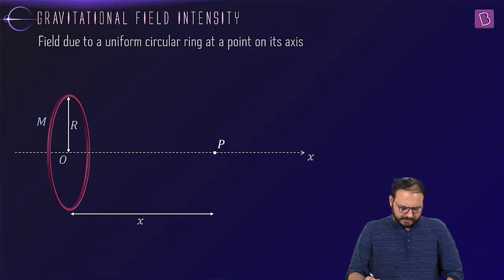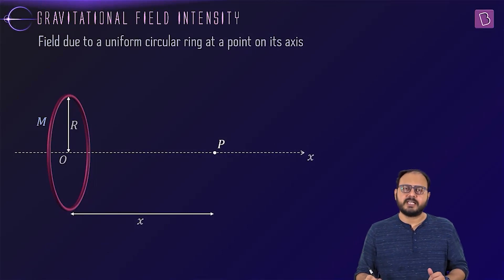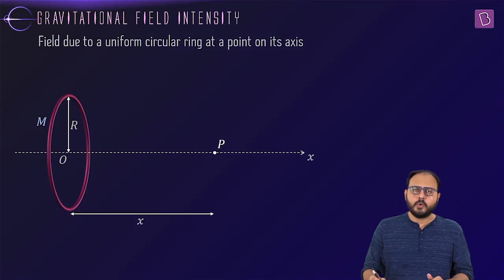Gravitational field due to a uniform circular ring at a point on its axis. Guys, quick flash.